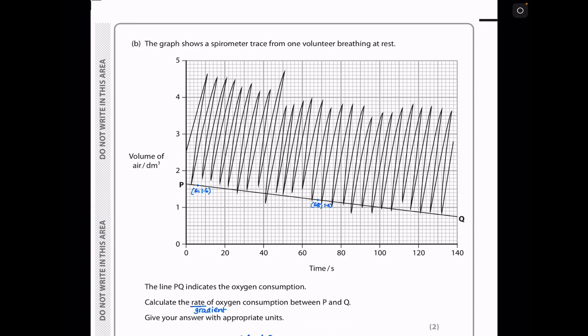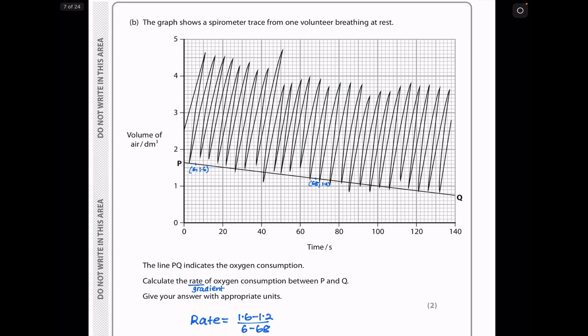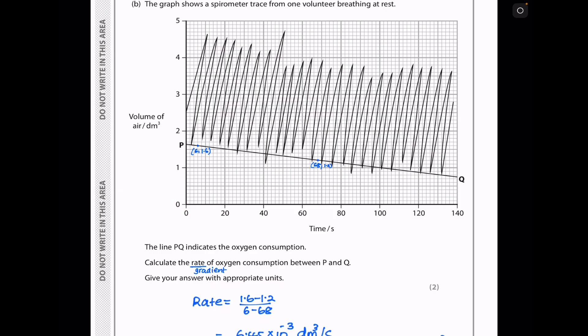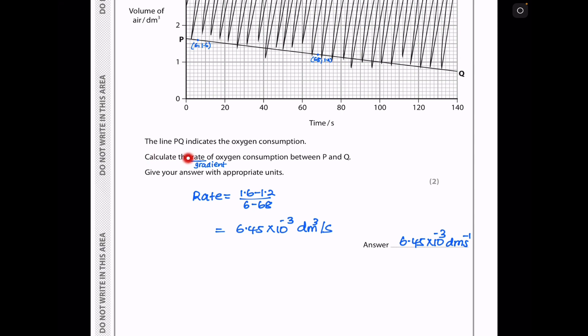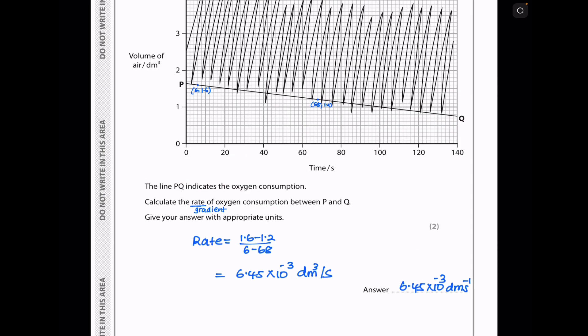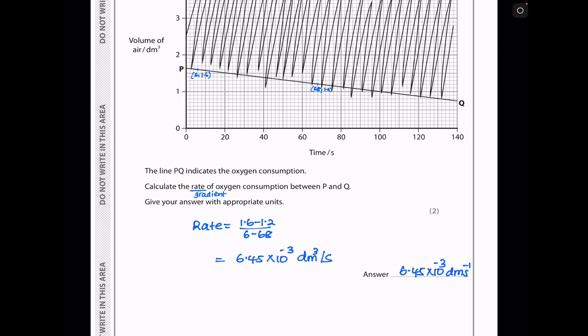In part B, the graph shows a spirometer trace from one volunteer breathing at rest. We see from this trace the vertical axis is volume of air in decimeters cubed and the horizontal axis has time in seconds. We can see a line P to Q. This has been drawn for us. Down here, they say the line PQ indicates the oxygen consumption. Calculate the rate of oxygen consumption between P and Q. And they want you to give your answer with appropriate units. In this case, the rate is going to be the gradient of the line PQ. So I chose that point that has coordinates 6 and 1.6. And this other point here with coordinates 68, 1.2.